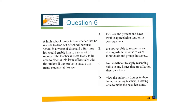Question number six: a high school junior tells a teacher that he intends to drop out of school because school is a waste of time and a full-time job would enable him to earn a lot of money. The teacher is most likely to be able to discuss this issue effectively with the student if the teacher is aware that many students at this age: A) focus on the present and have trouble appreciating long-term consequences; B) are not yet able to recognize and distinguish the diverse roles of individuals and groups in society; C) find it difficult to apply reasoning skills to issues that are affecting their own lives; D) view authority figures in their lives, including teachers, as being able to make the best decisions.